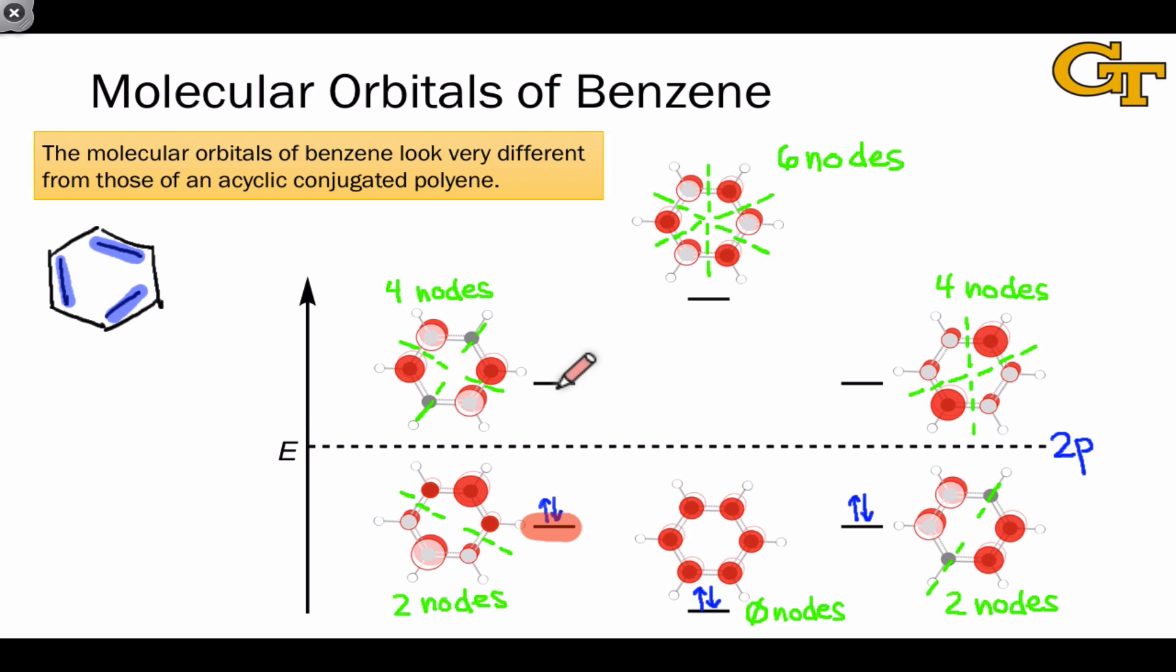One reason for the greater stability of benzene relative to something like hexatriene is that these degenerate two-node levels are collectively lower in energy than the filled levels that correspond in something like hexatriene, where these would be stacked on top of one another. One would be higher in energy than the other. In benzene, because there are two ways to put two nodes within a molecular orbital, both of these end up at the same energy and collectively at a lower energy than the corresponding orbitals in hexatriene.